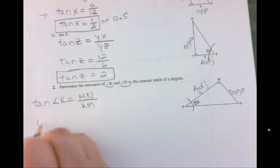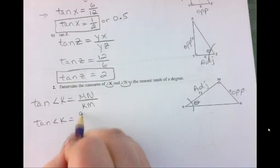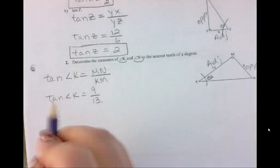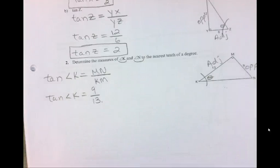So let's write tan angle k is equal to MN over KM. And then let's fill in our numbers. Equals 9 over 13.